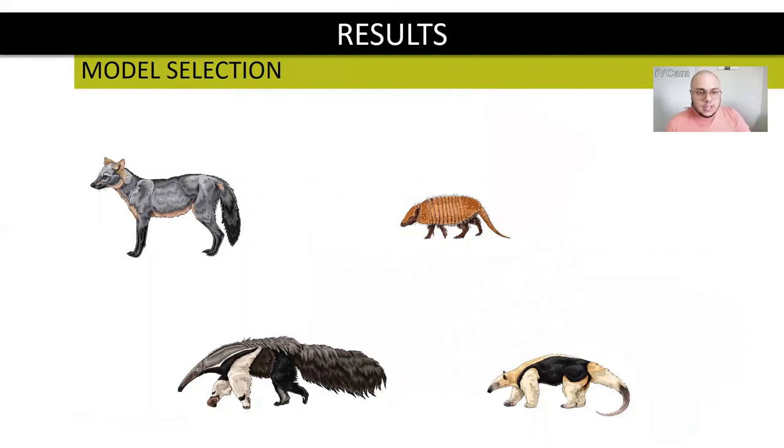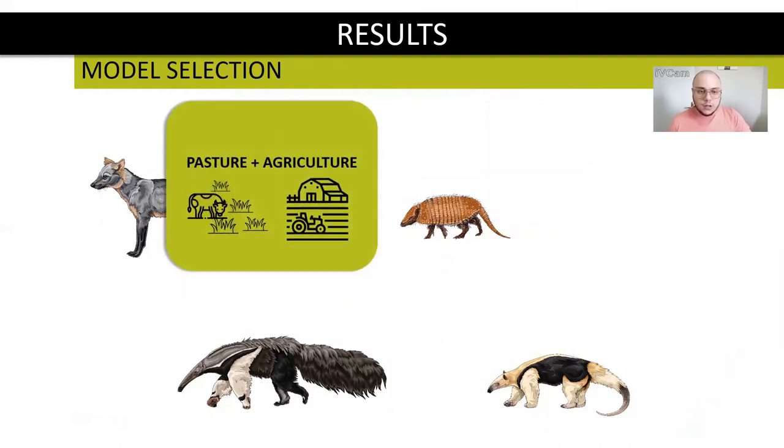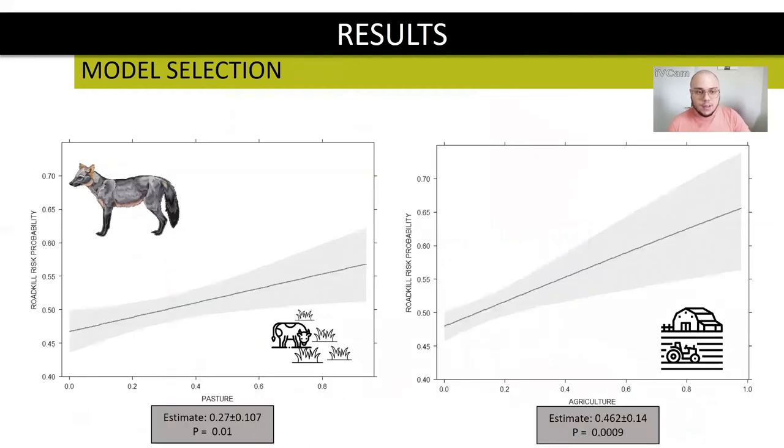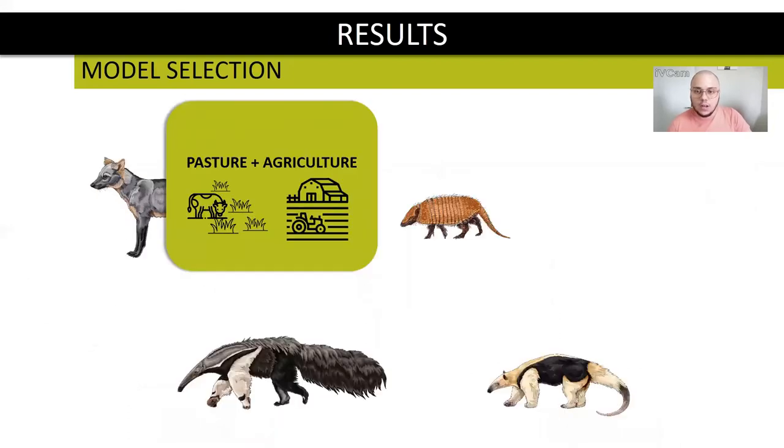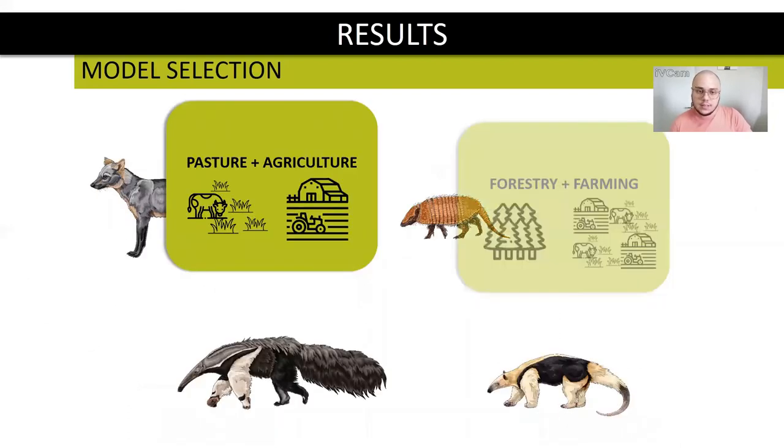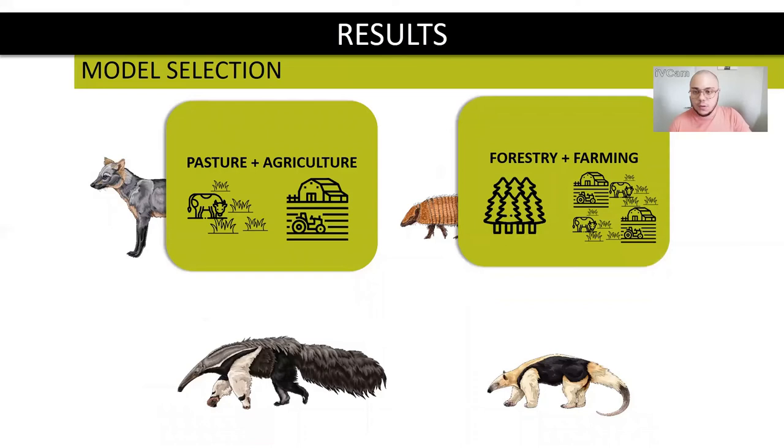Results of model selection: for Cerdocyon thous, pasture combined with agriculture as the main factor to predict the road risk, with agriculture having a bigger effect than pasture, and both of the uses can be considered as matrices in the landscape. For Euphractus sexcinctus, two matrices combined also respond better.